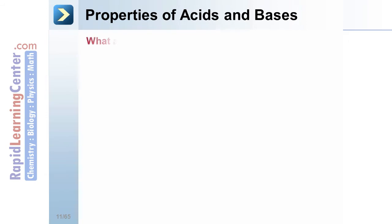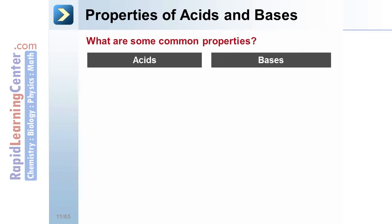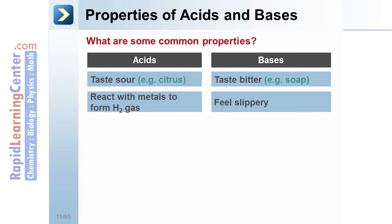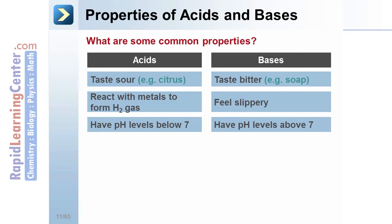There are some common properties of both acids and bases. Acids taste sour. Think about grapefruits. Bases taste bitter. Think about the taste of soap. Acids react with metals to form hydrogen gas. Bases feel slippery, again like soap. Acids have pH levels below 7, while bases are above 7. Acids turn litmus red. Bases turn litmus blue.